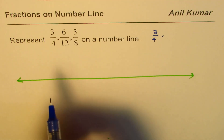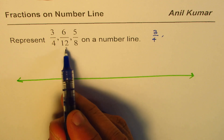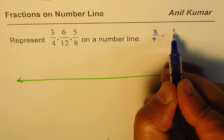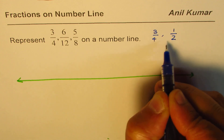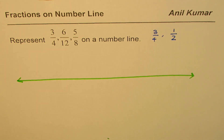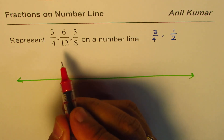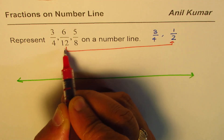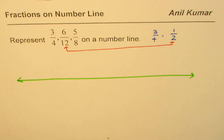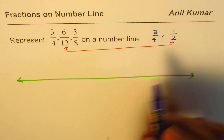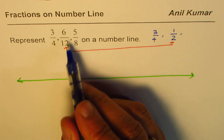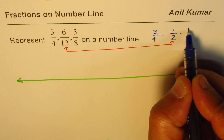6 out of 12 can be simplified. You could write this as half — do you see that? So 6 out of 12 can be written as half, dividing both by 6. And then we have 5 out of 8.